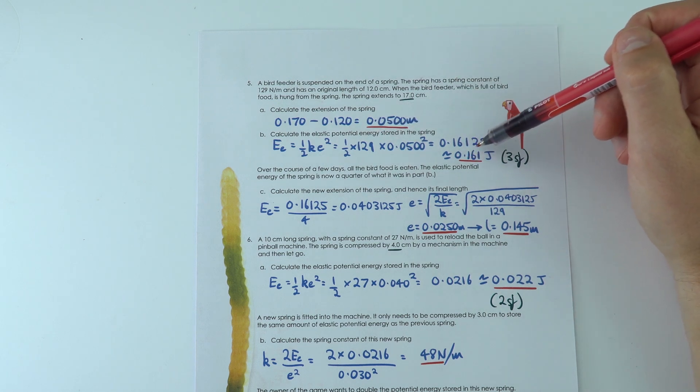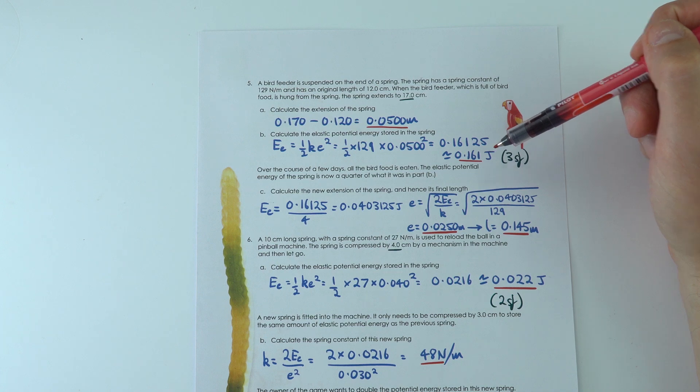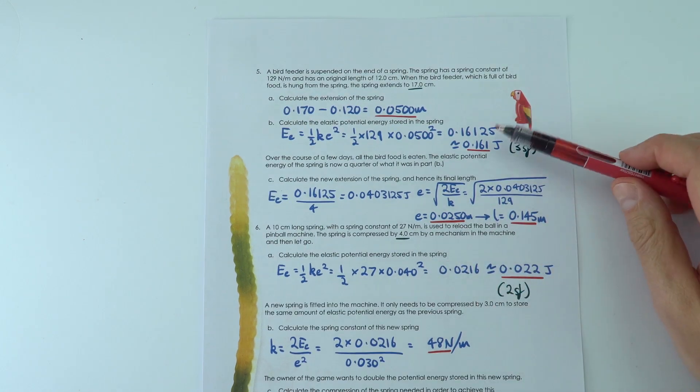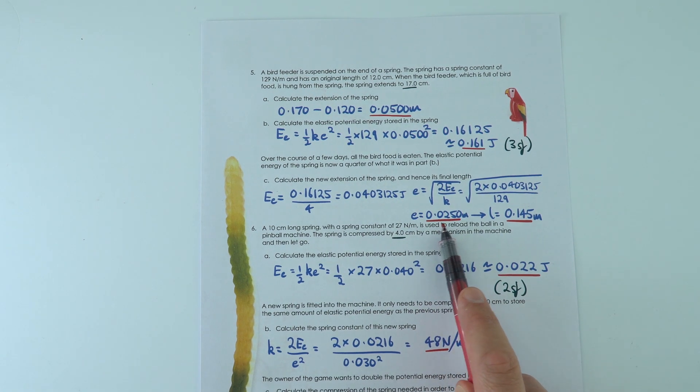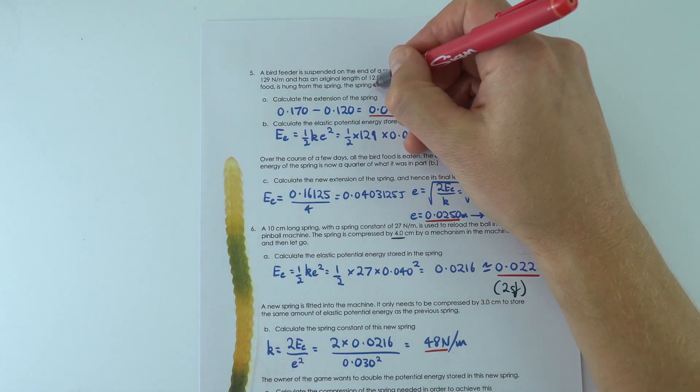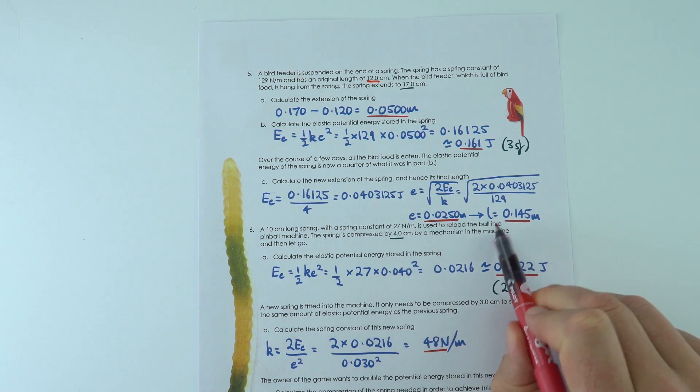And that means when it comes to working out the potential energy stored in the elastic store, it's 0.161 joules. And then all I've done is for this one over here, I've worked out the extension of the spring.